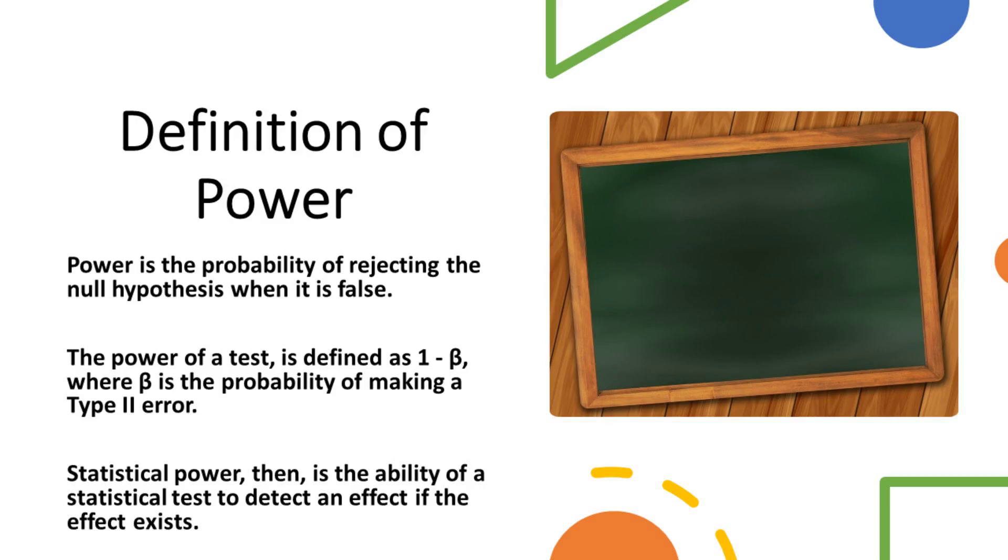Statistical power, then, is the ability of a statistical test to detect an effect if the effect exists. In practical terms, a test with high power is more likely to identify a true effect, while a test with low power is more prone to missing a real effect. Understanding and maximizing statistical power is essential for ensuring the validity of our research findings and drawing accurate conclusions.